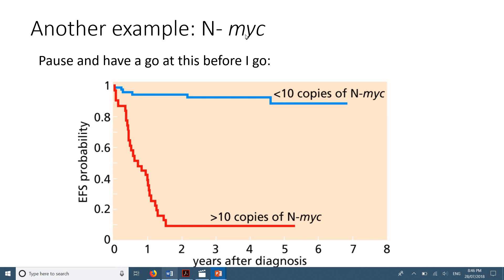Here we have another example with a different gene — I don't need you to know what it is, but it encodes for a transcription factor involved in cell growth. Again, we have two subsets of population: those with fewer than 10 copies of this gene, and those with a larger number of copies. A larger number of copies means more protein from the gene would be expressed.